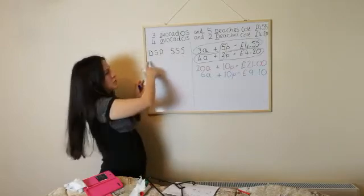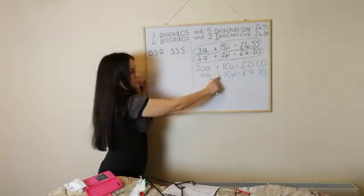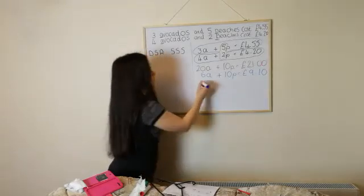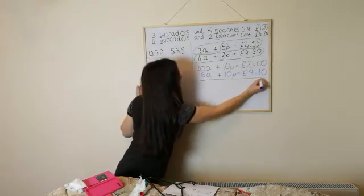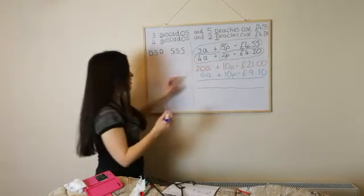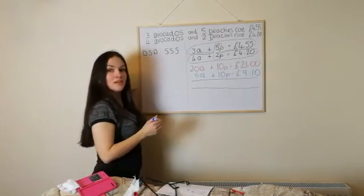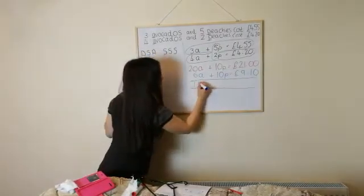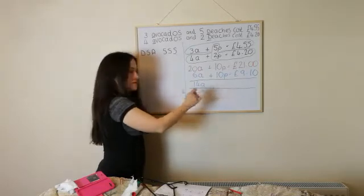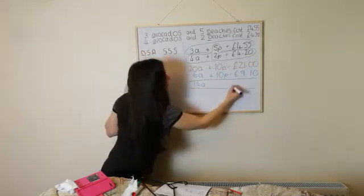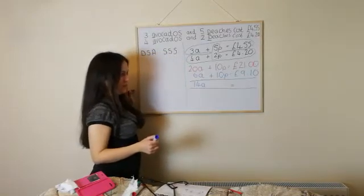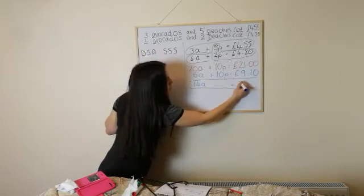So, at this point what we'll do is, we'll look at this bit here. And because we've got the same signs, what we have is same signs subtract. So, we're going to use that one. So, what we do is, we draw this underneath. And 20A, take away 6A, gives me 14A. Positive 10P, take away positive 10P, we've got nothing. And £21, take away £9.10, gives me £11.90.